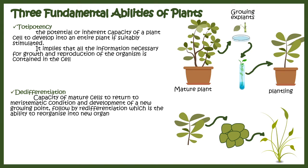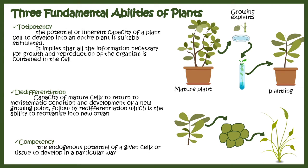The third capability is competency, which simply means the endogenous potential of a given cell or tissue to develop in a particular way. It's a genetic program that is inbuilt, guiding the cells to grow into a particular fate. These three factors are absolutely essential for plant tissue culture.